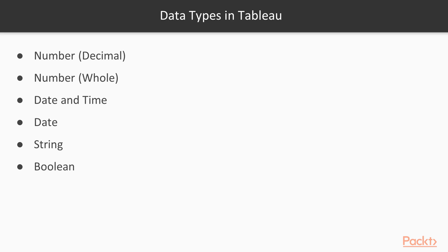Strings in Tableau are enclosed in single quotation marks. Boolean values are logical values — they take values such as true and false.